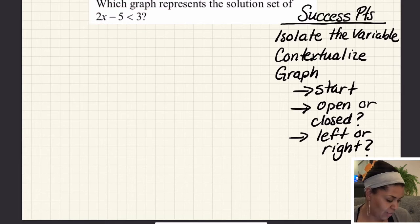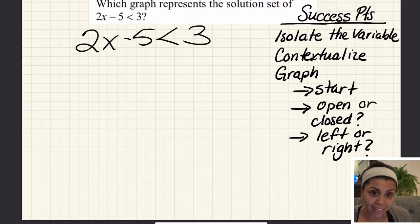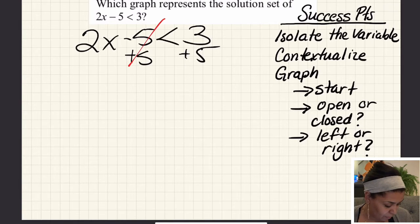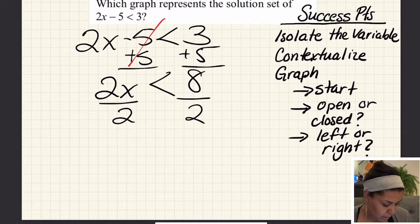In this first problem, I have 2x - 5 < 3. Let's start by isolating the variable. I want the x by itself on the left side since it's already there, so I'm going to add 5 to both sides to create a zero pair. So I have 2x is less than 8.